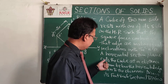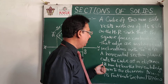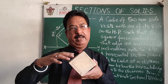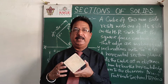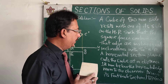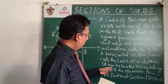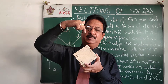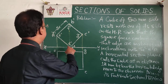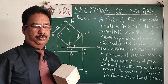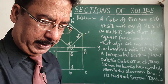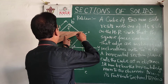After that, the problem says a horizontal section plane cuts the cube at a distance of 18 mm below the horizontal edge nearer to the observer. A horizontal section plane is parallel to the HP — in the front view it looks like a straight line parallel to the reference line. The edge nearer to the observer is B' F', and we have to cut the solid by this horizontal section plane 18 mm below B' F'. So this section plane will cut like this.